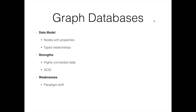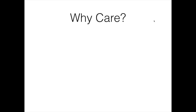Weaknesses — there are many great things, but one of the big weaknesses is it's such a giant paradigm shift from where we have all been trained to think about normal forms and breaking up our data. That can be really hard to get over, but once you make the jump, it's pretty amazing. Examples of graph databases: Neo4j, Titan, OrientDB, and there are some others.